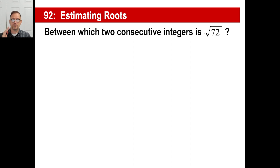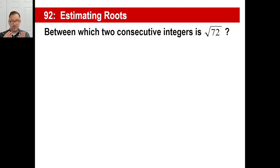Consecutive integers means two in a row, like 19 and 20, or 14 and 15, or 3 and 4. So between which two consecutive integers is the square root of 72?